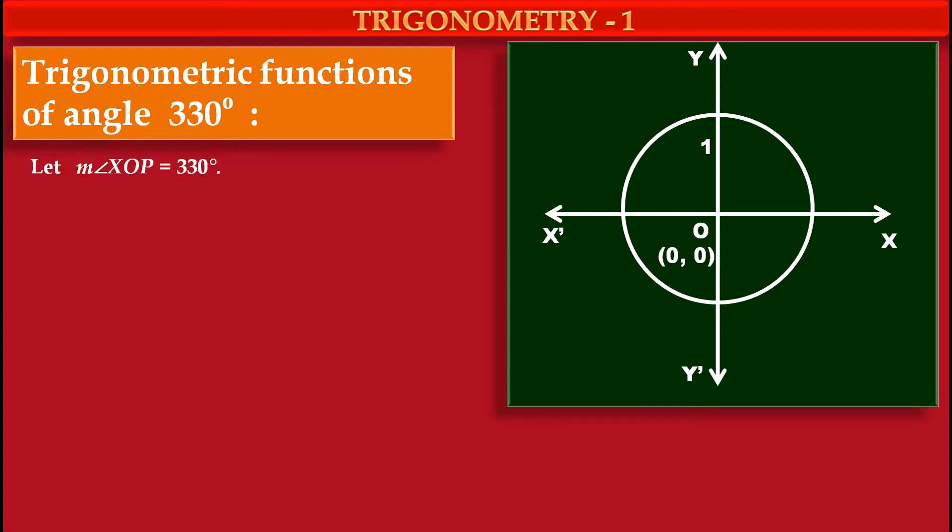Let's measure angle xop is equal to 330. So now we have to draw this angle xop in our diagram. First we have to draw initial arm ox, ray ox in the positive direction of x-axis. By measuring angle 330 degrees,